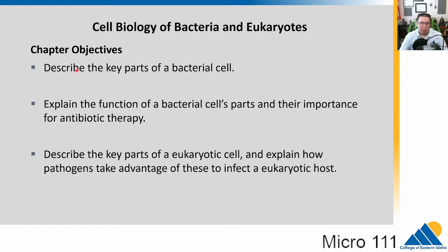We need to be able to talk about the key parts of a bacterial cell. That's the first order of business. Then we will talk about the function of the bacterial cell's parts and how we can target them for antibiotic therapy. Knowing how a bacterial cell is put together allows us to find ways to destroy it, which is ultimately the goal of our antibiotics. And then we'll talk about the key parts of the eukaryotic cell and how eukaryotic pathogens can take advantage of us and our cells to get in and hide themselves.